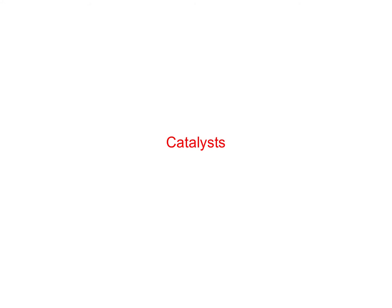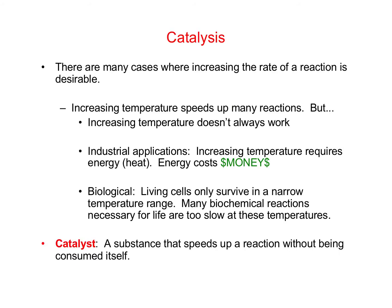Our final topic on chemical kinetics is about catalysts. It is very often desirable to increase the rate of a reaction. As we talked about previously, one way to speed up most chemical reactions is to increase the temperature. But there are some problems with that — it doesn't always work. In industrial applications, increasing the temperature requires energy or heat, and energy costs money, so it might be too expensive. Another problem is that in biological systems, living cells can only survive in a narrow temperature range. If we increase the temperature too much, we kill the cells.